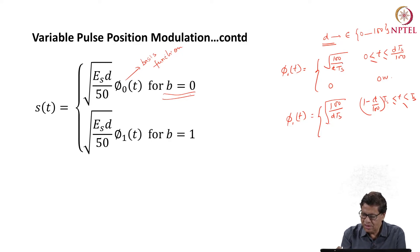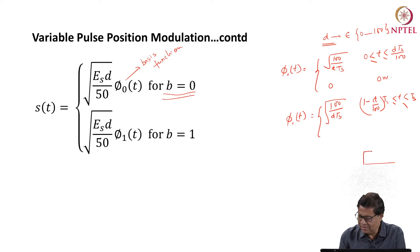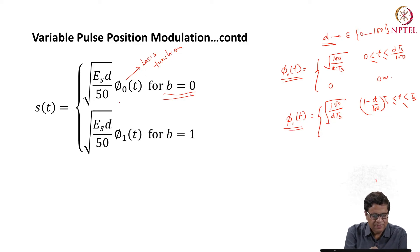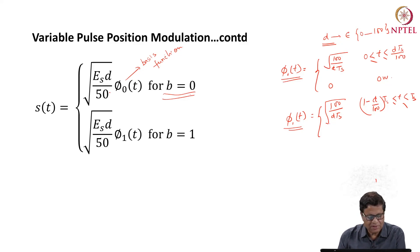The basis function φ_0(t) = √(100/(D·T_S)) for 0 ≤ t ≤ (D/100)·T_S, and 0 otherwise. The basis function φ_1(t) = √(100/(D·T_S)) for (1 - D/100)·T_S < t ≤ T_S. So for bit 0 the pulse starts at the beginning, and for bit 1 it starts late. These basis functions are defined for different values of dimming range D.